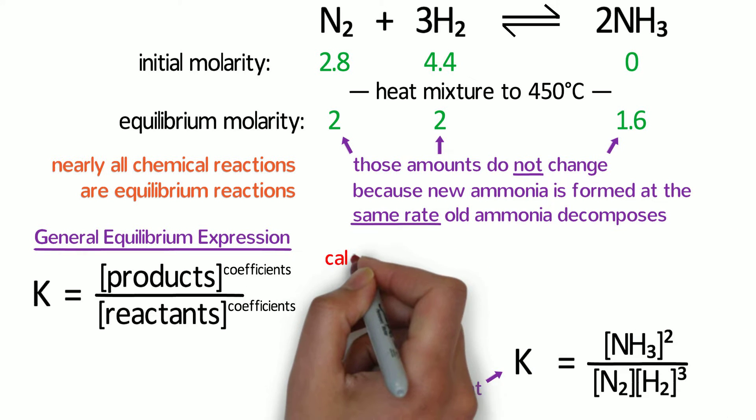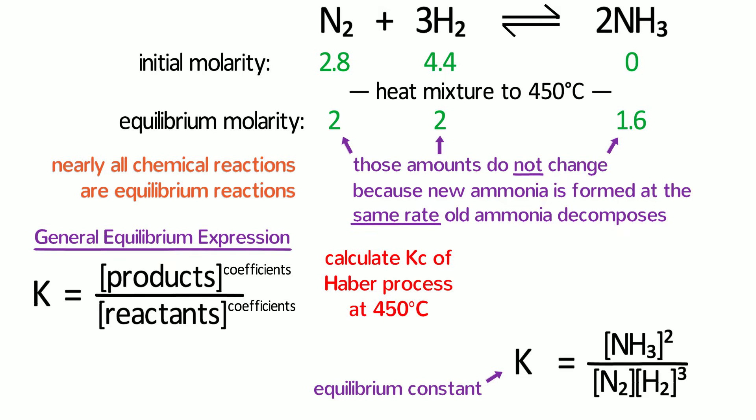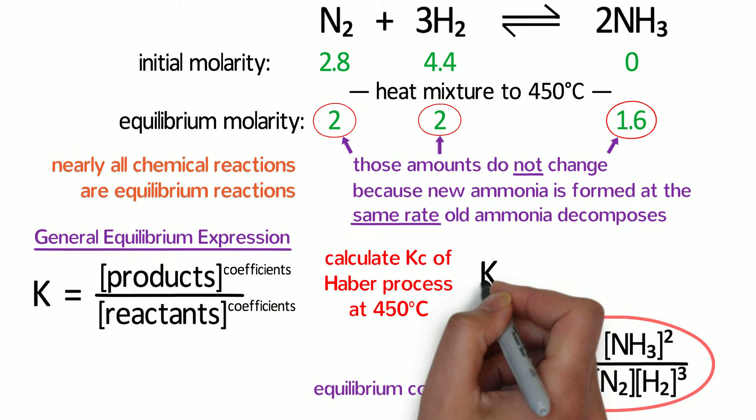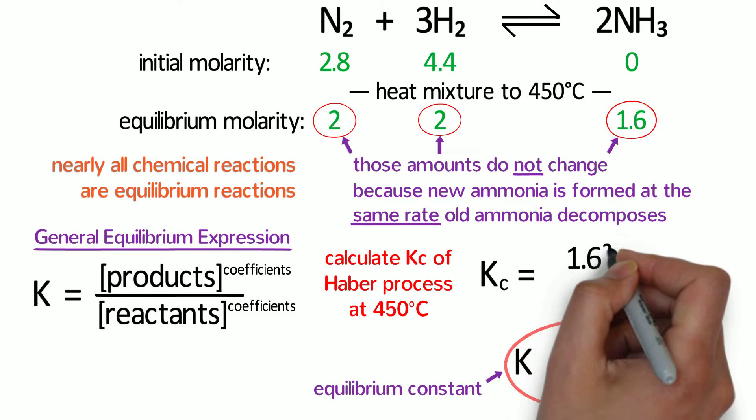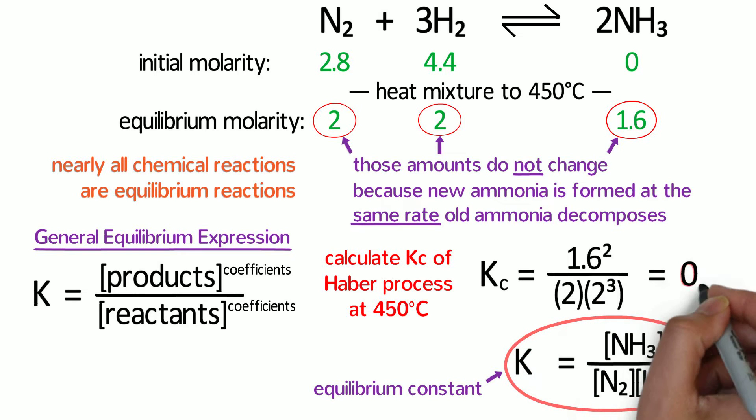Let's calculate the equilibrium constant of the Haber process at 450 degrees Celsius. To do that, we are going to use the equilibrium expression of the Haber process and plug in the molarity at equilibrium. Kc equals 1.6 squared divided by 2 times 2 cubed, which equals 0.16.